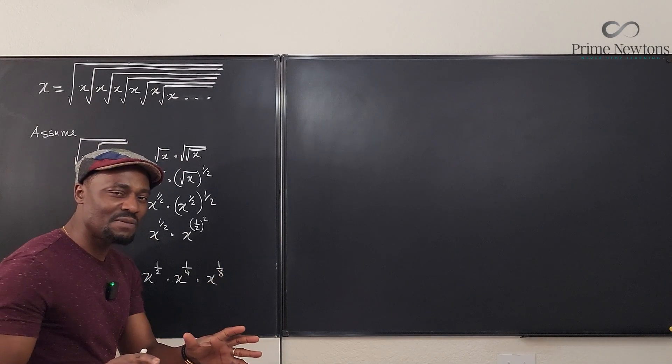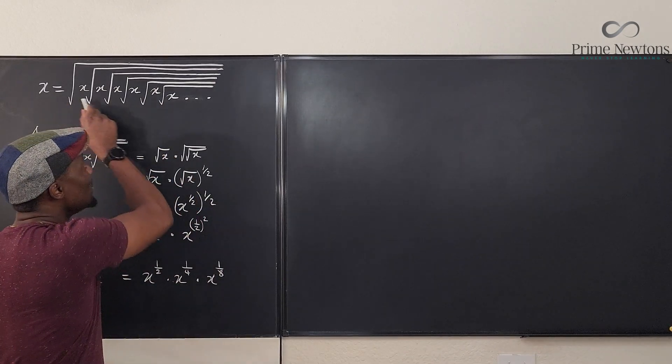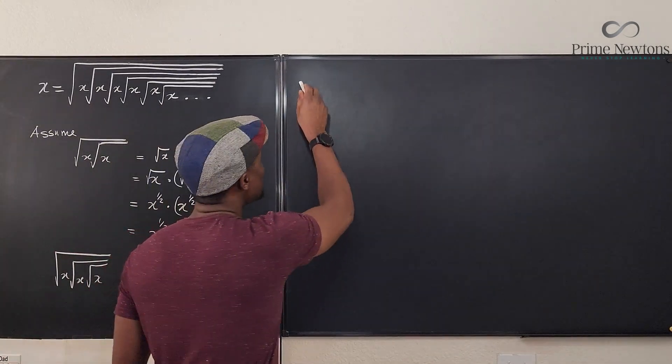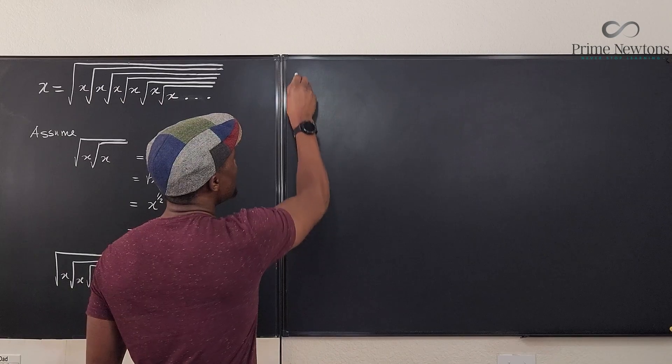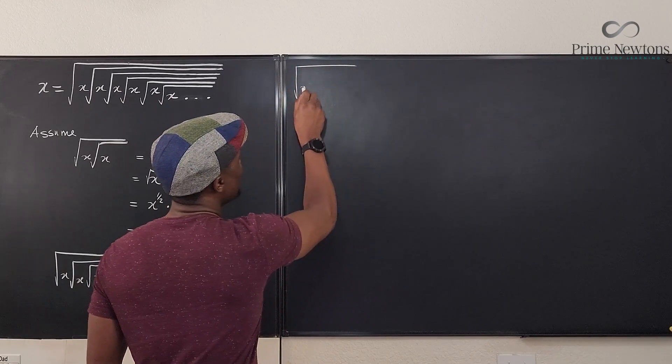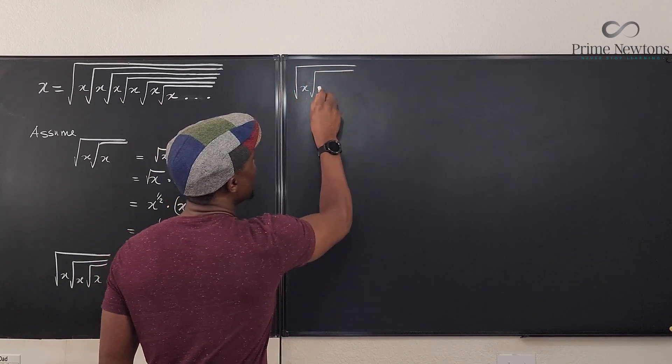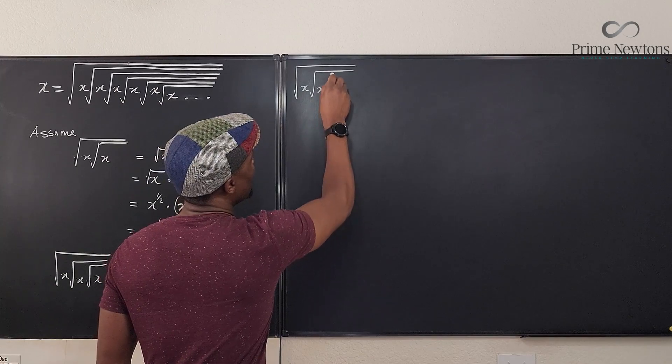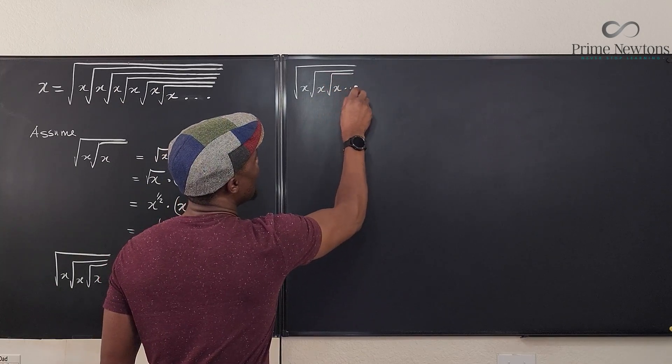So it's easy for you to see that if I continue this sequence—the square root of x, radical x, radical x, that keeps on going—